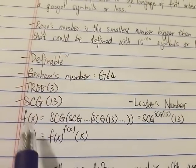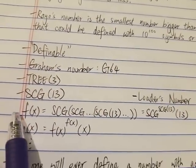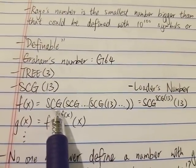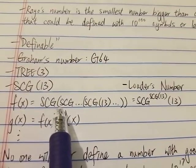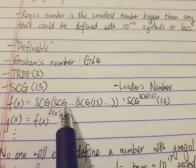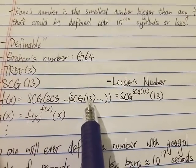Let me give you one example. So let's say you define a function, fx as SCG, an iterated SCG function. Let's say SCG of SCG dot dot dot of SCG(13).